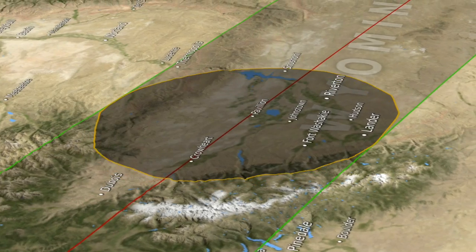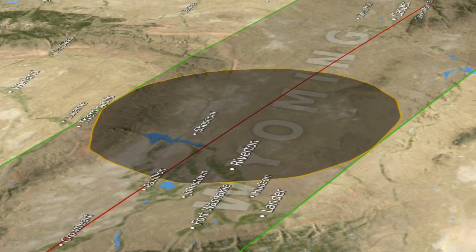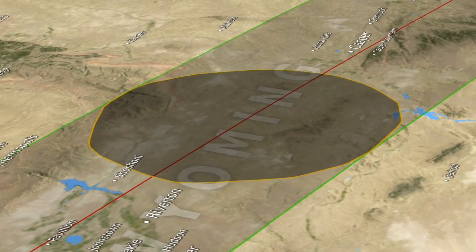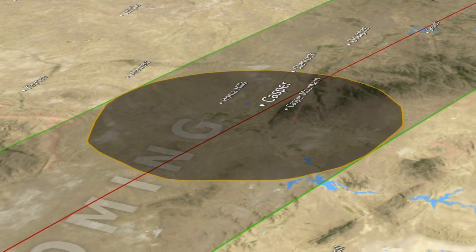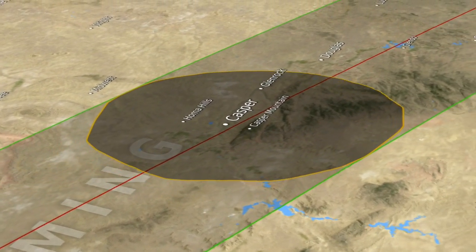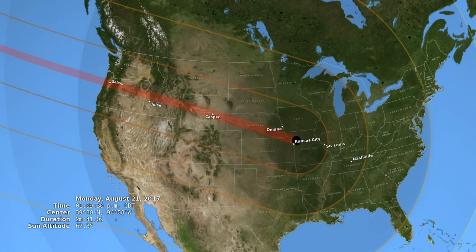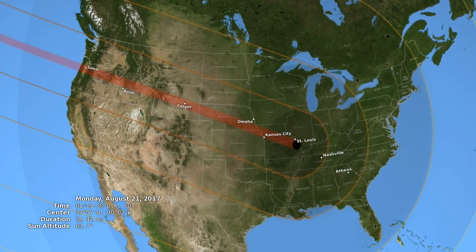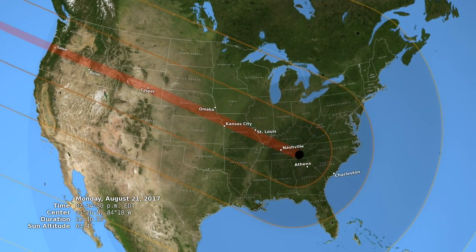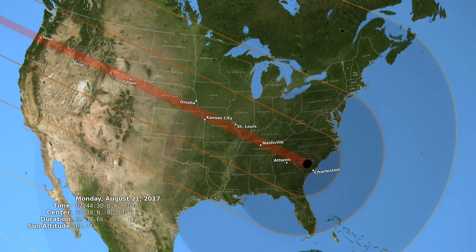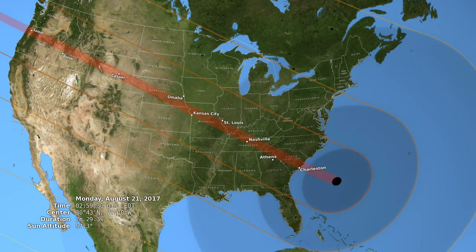We've known for a long time that the elevation of the observer affects where the shadow is. We've also known that the mountains and the valleys along the edge of the moon affect the shadow. So you may have seen on eclipse maps in the past that the image of the umbra — that shape of the shadow on the Earth — is drawn as a smooth oval, but we know that the moon isn't smooth.